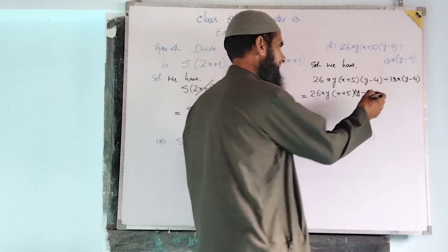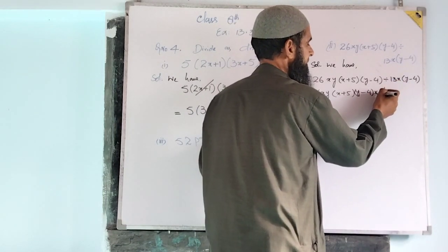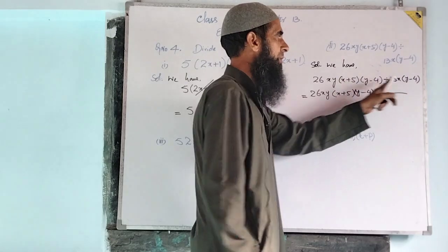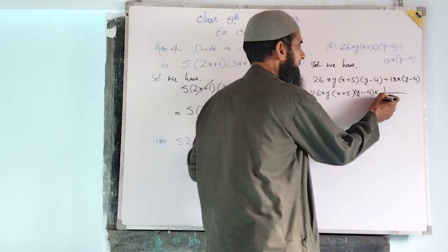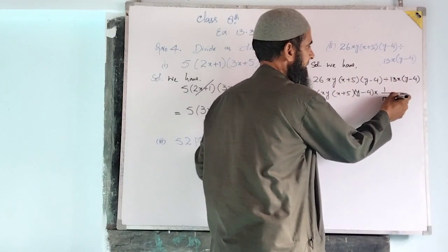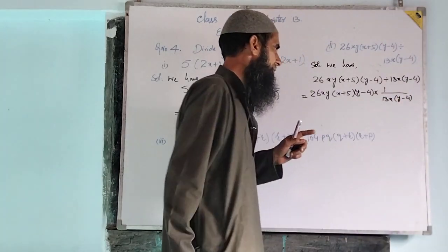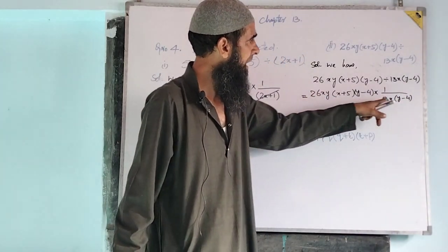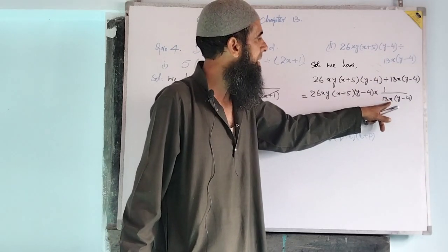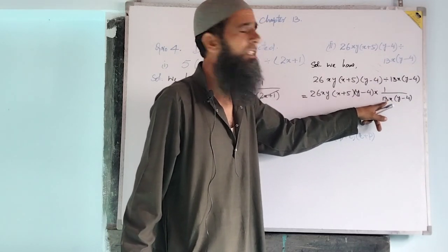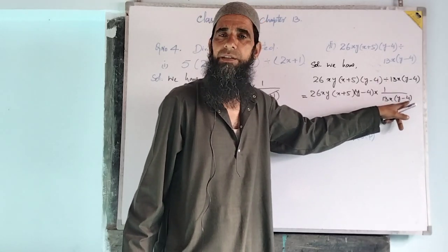We change multiplication and divide by taking the reciprocal of the second algebraic expression. We have here 13 into x into (y-4). We have 13 as a factor, x as a factor, and (y-4) as a factor.